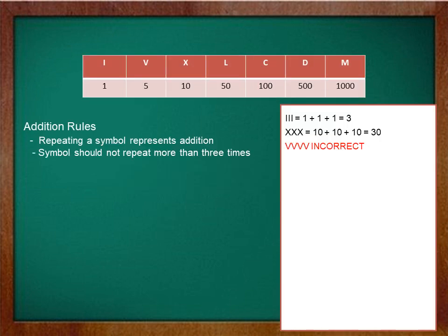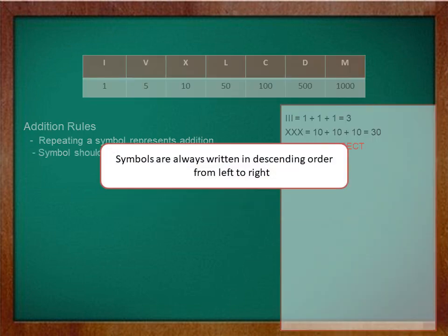Let's move on to the third rule. The symbols are always written in descending order from left to right. It means that you start with greater number on the left and then the smaller number and then the smaller number and so on.